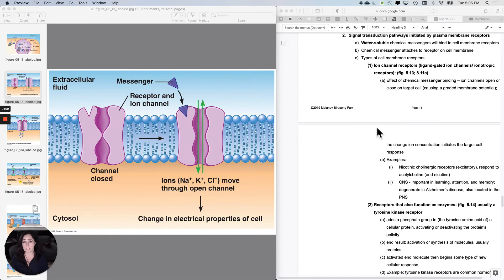So only one type of signal transduction pathway is initiated by lipid-soluble chemical messengers, and that was gene activation. But there are four that you're going to learn that are activated by water-soluble chemical messengers, because there are a lot more water-soluble chemical messengers.